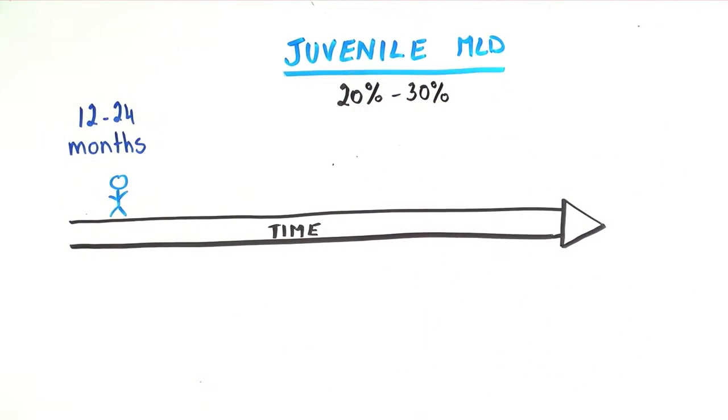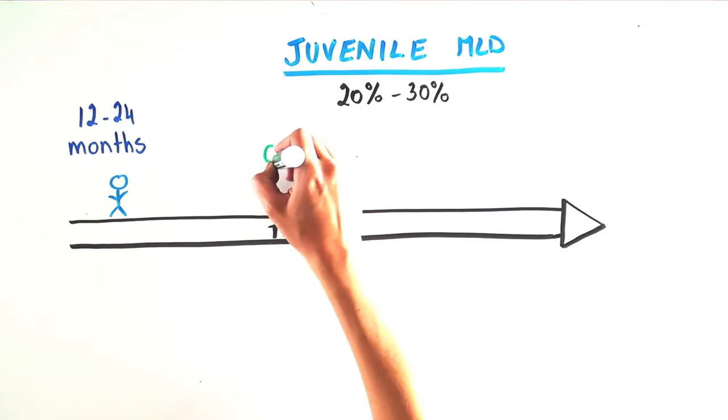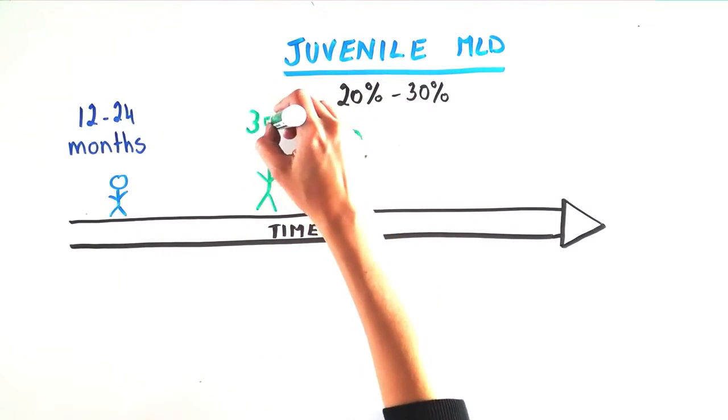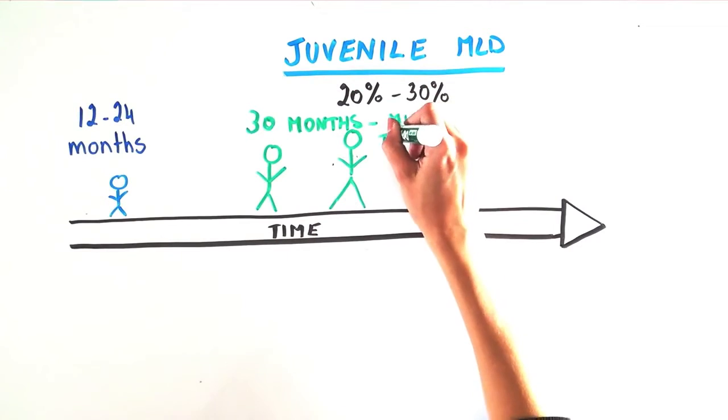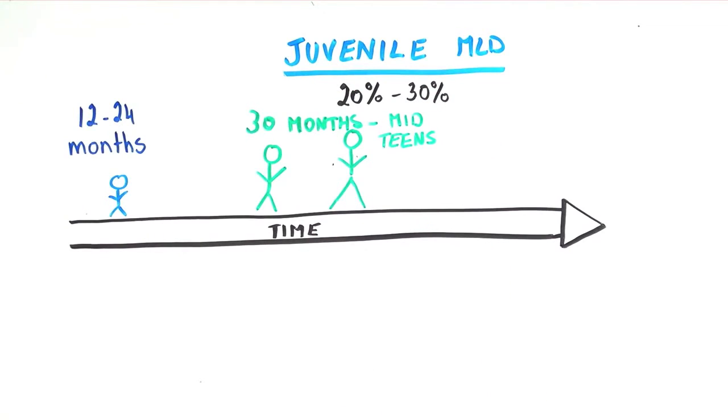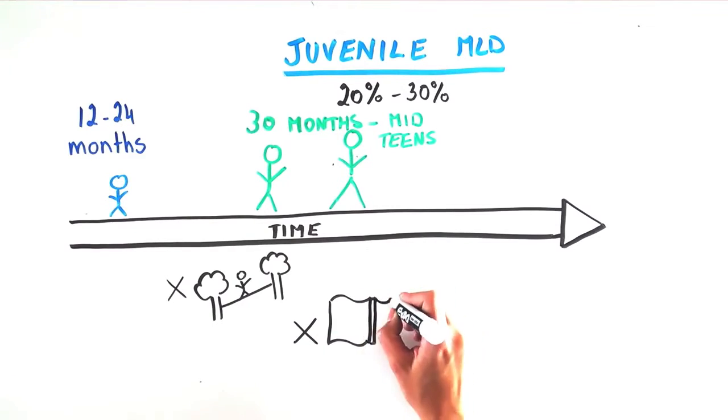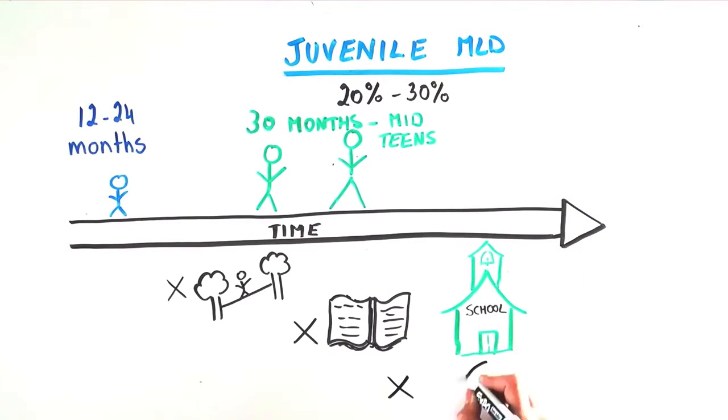Juvenile MLD occurs in 20-30% of cases, with onset of symptoms between 30 months and the mid-teens. These children often show a decline in balance or walking, clumsiness or a decline in school performance, changes in behavior or mental functioning.